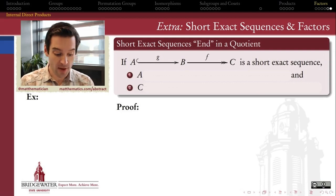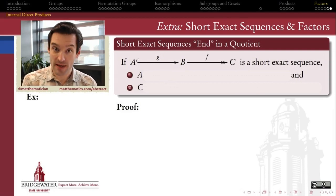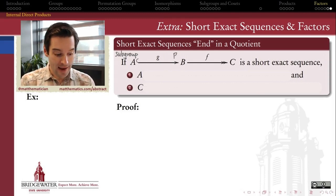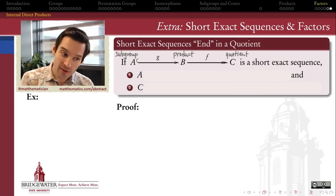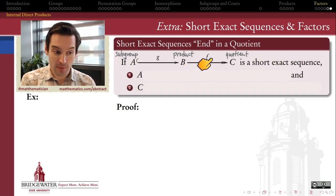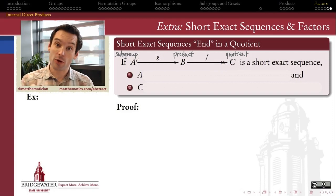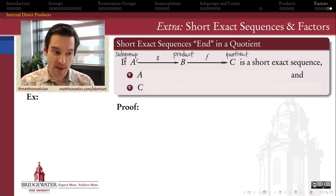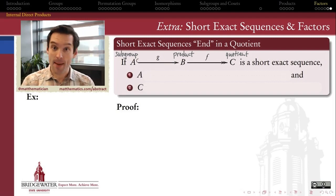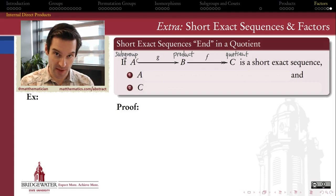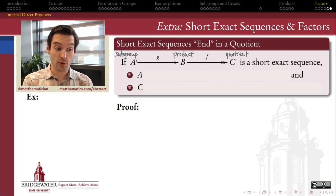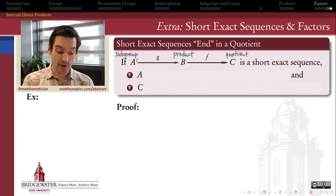So how does this help us to think about quotients? Well, if the group in the middle B is playing the role of the product, and A is kind of playing the role of a subgroup within that product group, then we would say that C, the group on the end, can play the role of the quotient. So in our short exact sequence we can think of the group at the end as being like the quotient of B by A — but only if A happens to be isomorphic to a normal subgroup of B.